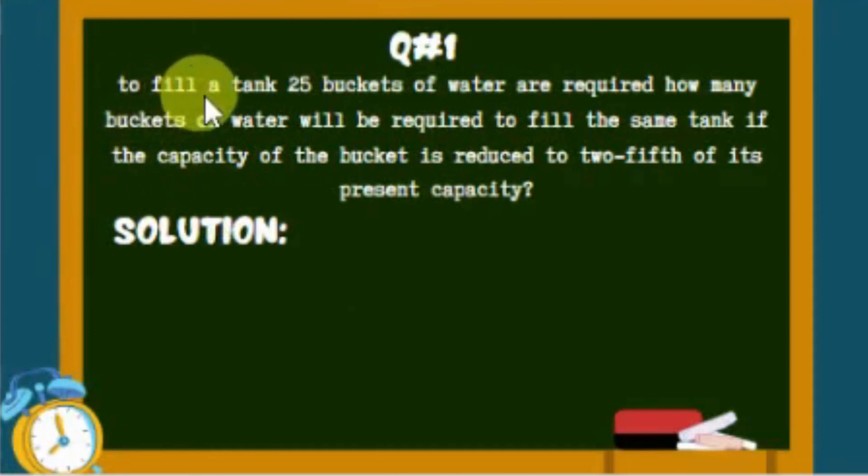Here, 25 buckets are required to fill a tank, meaning the capacity of the tank is 25 buckets. Next, the question tells us the bucket is reduced with a 2 by 5 ratio, and we have to find out how many buckets will be used after reduction.